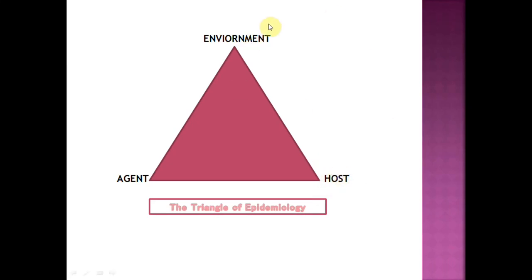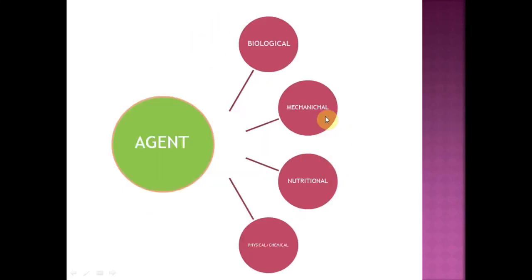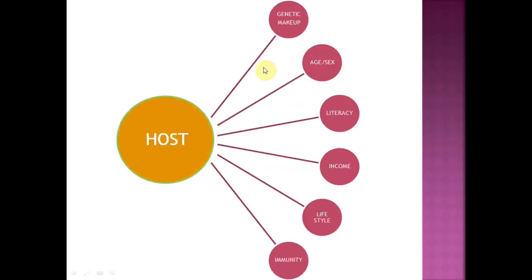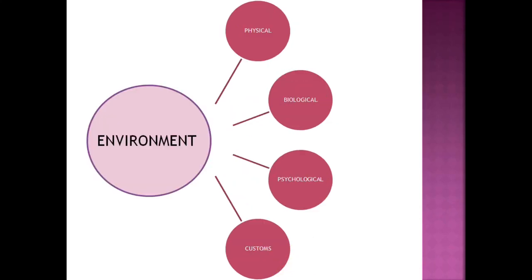In the epidemiological triad, for tuberculosis: agent is the tuberculosis bacilli, environment is where the person lives, and host includes immunity and other host factors. The agent can be biological, mechanical, nutritional, physical, or chemical. Host factors include genetics, age, gender, literacy, income, lifestyle, and immunity. Environmental factors include customs, psychological, biological, and physical factors.